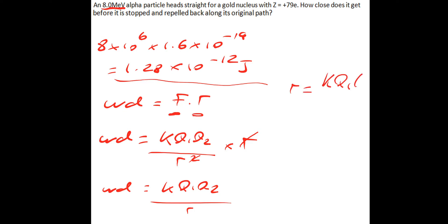So K is a constant that we know. Charge 1 is the 79 times the charge of a proton. Charge 2 is the charge on an alpha particle, which is, an alpha particle remember, is 2 protons and 2 neutrons, so its charge is 2E. Divided by the work done, the work done we just figured out is 1.28 times 10 to the minus 12.